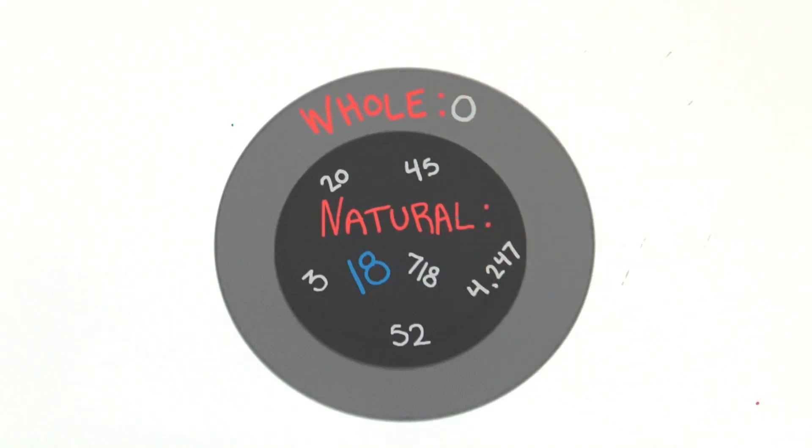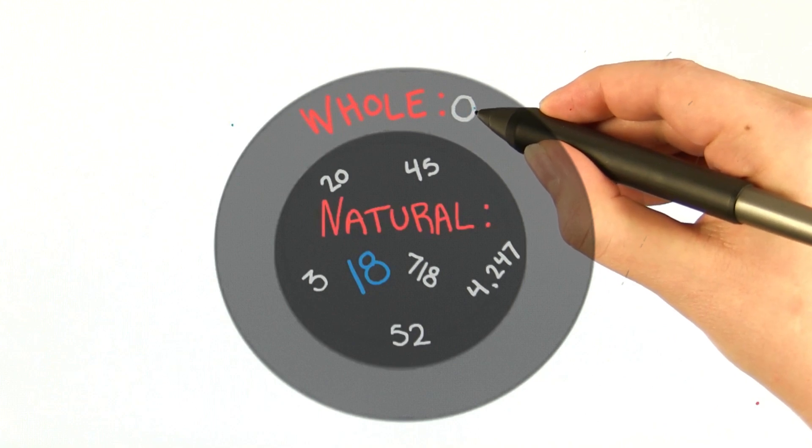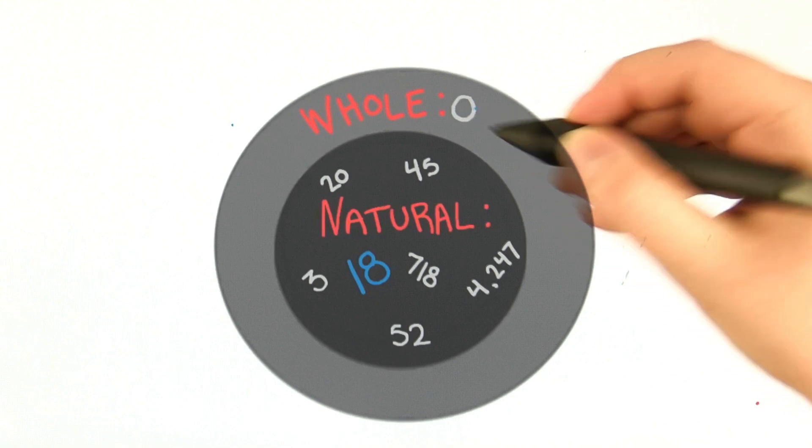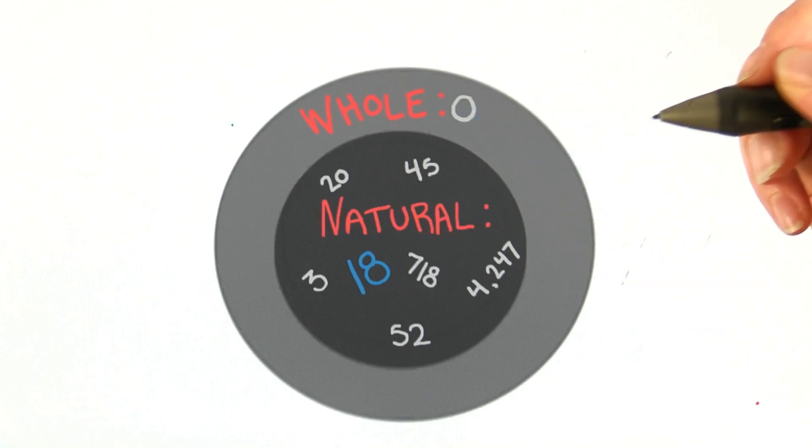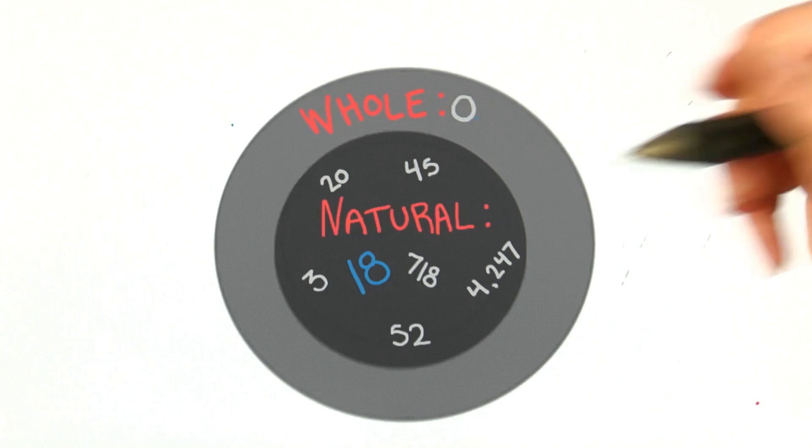If we pick 0, however, we can only point to the whole number circle, not the natural number circle, since 0 is whole but not natural.